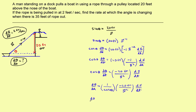I've got dθ/dt equal to... but I need to know what theta was at the moment in question. I'll leave that blank for now and plug in the other values. I've got negative 20 feet divided by S squared. What is S at the moment in question? The problem says the angle is changing when S is 35 feet. So I plug in 35 feet here, remembering to square it, times ds/dt.